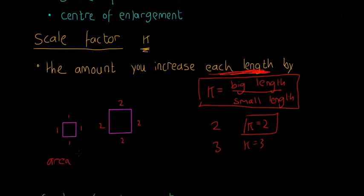Scale factor k just talks about the length. In this one here we're going to have the area of the first square is going to be one by one, which is just equal to one, and then the area of the second square, which is just two by two, is equal to four.